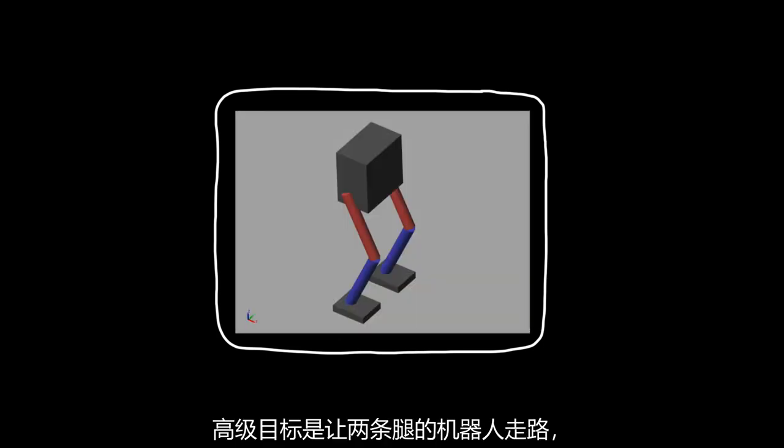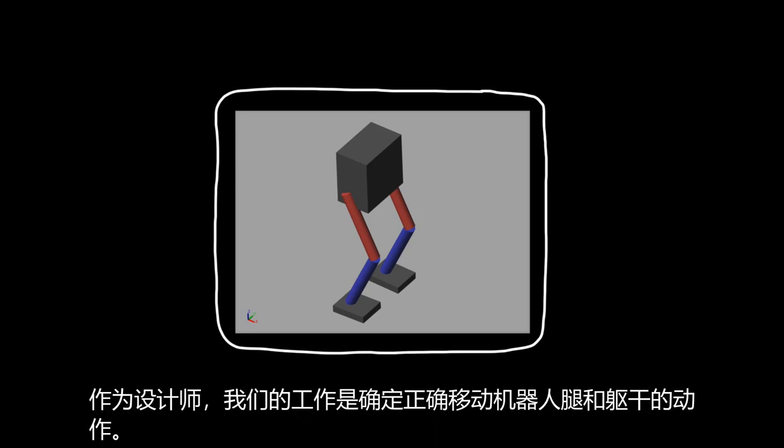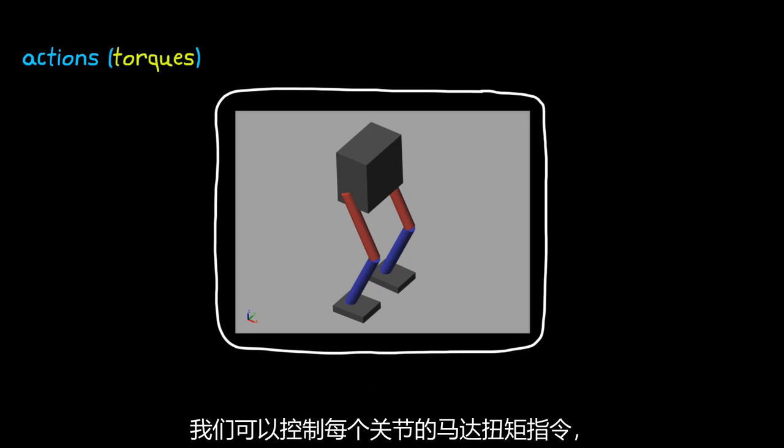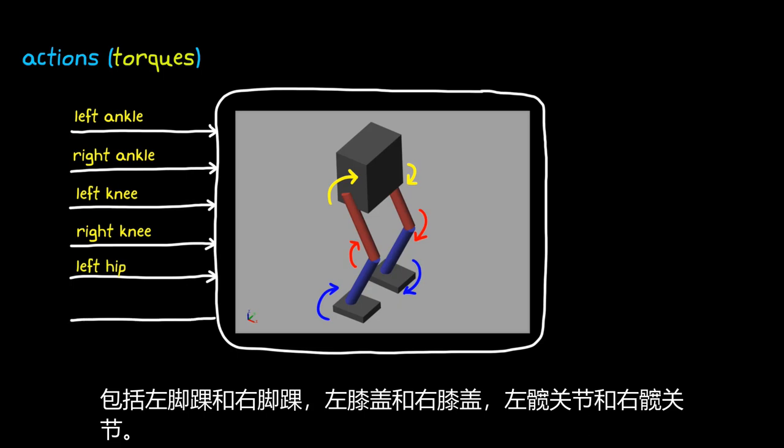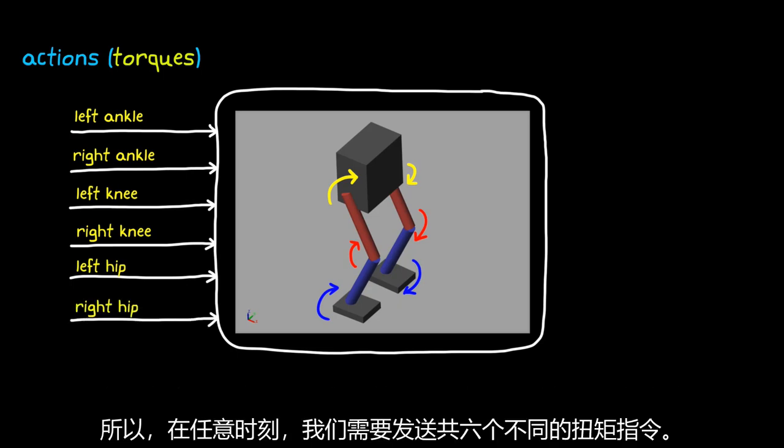Let's start with a quick overview of the problem. The high level goal is to get a two-legged robot to walk, somewhat like how a human would. Our job as designers is to determine the actions to take that correctly move the legs and body of the robot. And the actions that we can take are the motor torque commands for each joint. There's the left and right ankle, the left and right knee, and the left and right hip joints. So in all there are six different torque commands that we need to send at any given time.